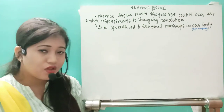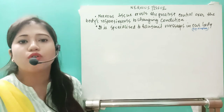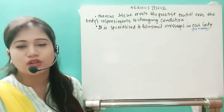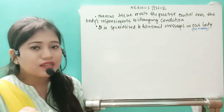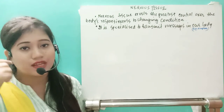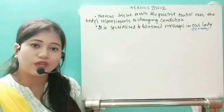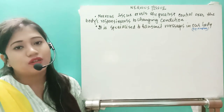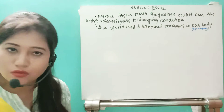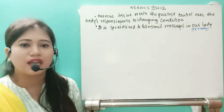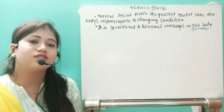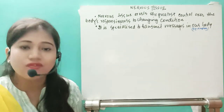Because neurons cannot divide, they require supporting cells. If some neurons die due to metabolic causes, that space is taken over by cells known as glial cells or supporting cells, which have many other functions. So nervous tissue is made up of two types of cells: neurons, which form gray matter, white matter, ganglion, and nerve; and glial cells, which support and assist the nervous system since neurons cannot divide.